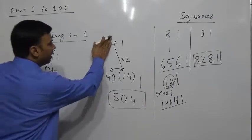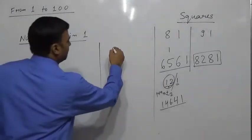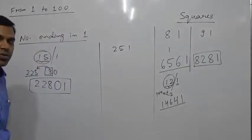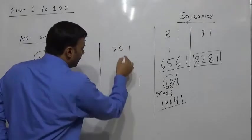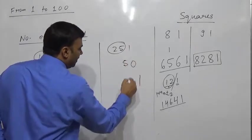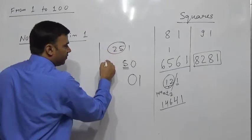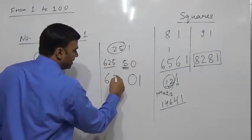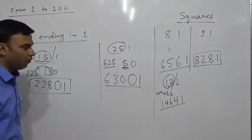Suppose we have 251 — chosen because we usually remember that 25² = 625. For 1 we have 1; 25 × 2 = 50, so 0 comes here and 5 carries forward; 25² = 625, and 625 + 5 = 630. The square of 251 is 63001.